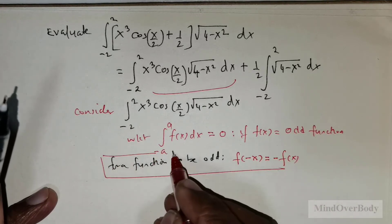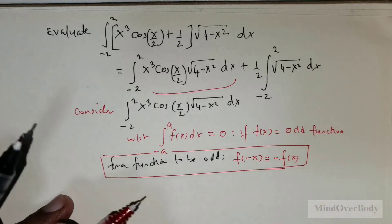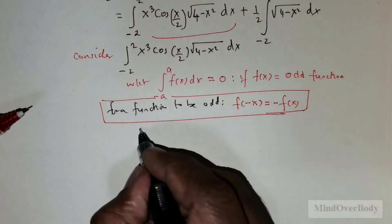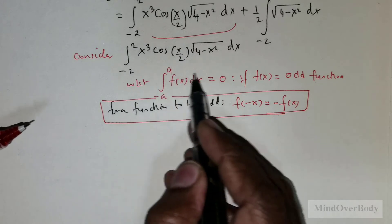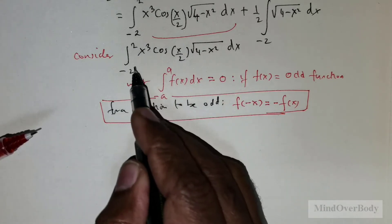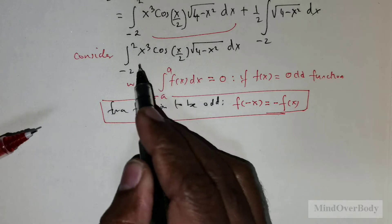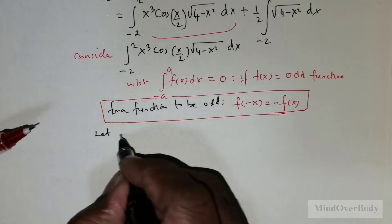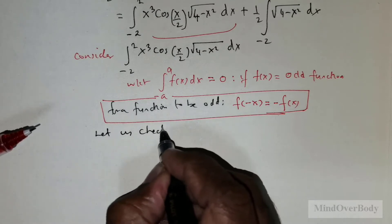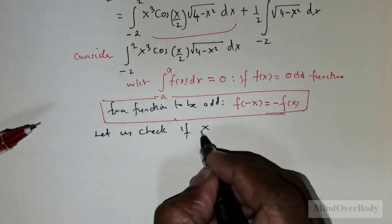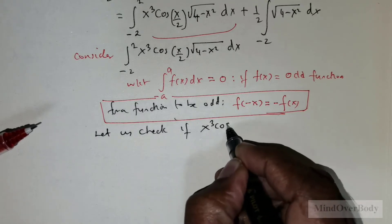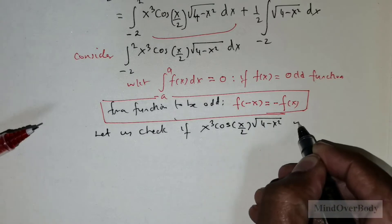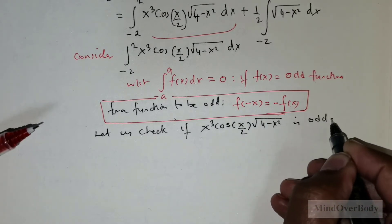This is an important point to know. For a function to be odd, the necessary condition is f(-x) = -f(x). Having known this, if the integrand is an odd function, then the integral would become equal to 0. So I'm going to check whether x³ cos(x/2) √(4 - x²) is odd or not.